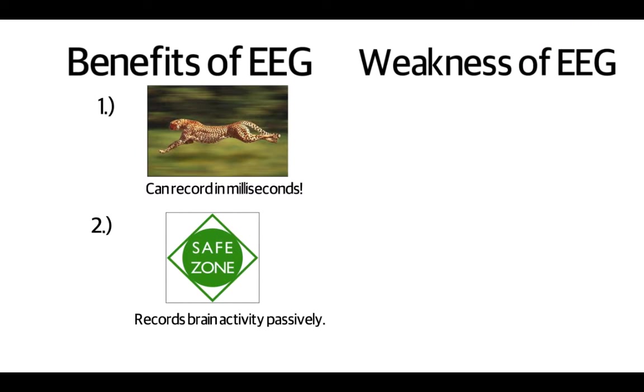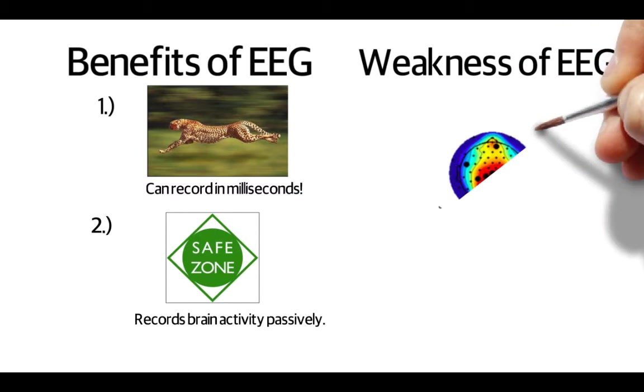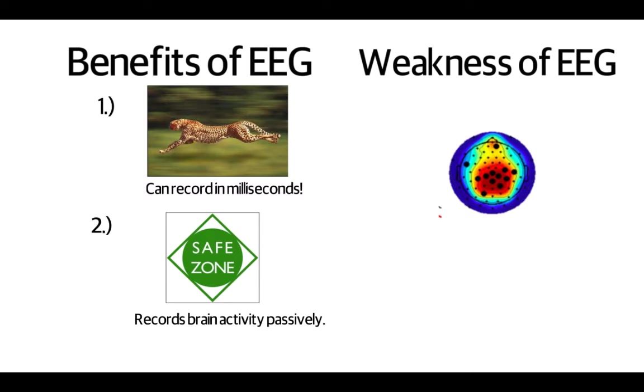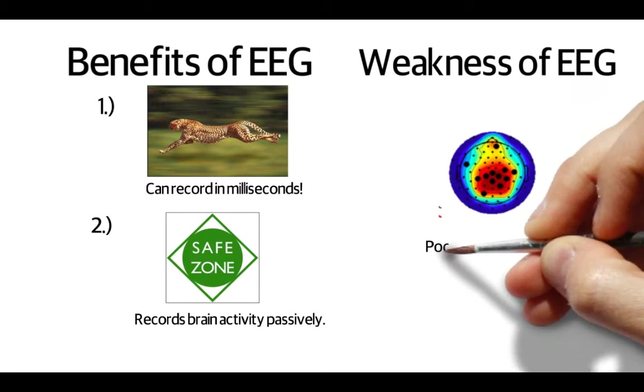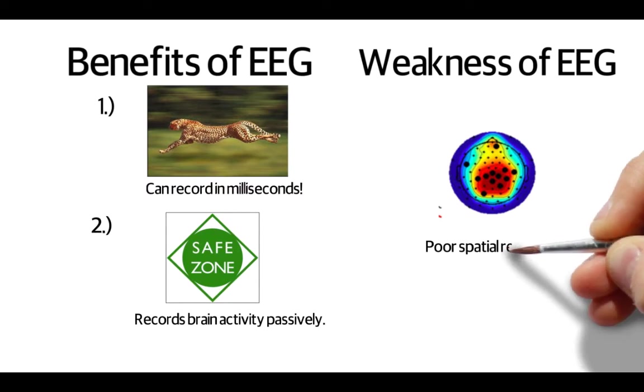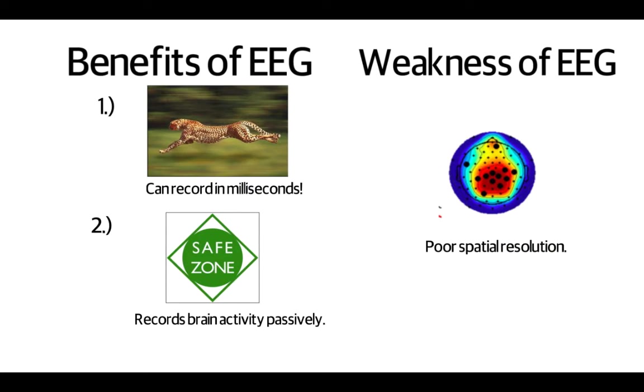One of the weaknesses of EEG, actually its main weakness, is its poor spatial resolution. This means that EEG is not very good at telling where things are happening in the brain. At least, not as good as other techniques, such as fMRI.